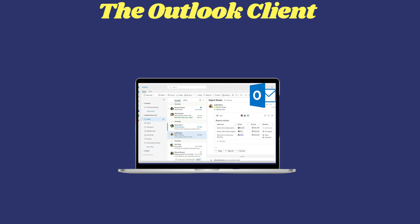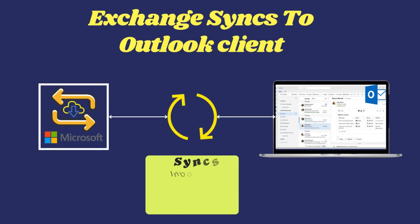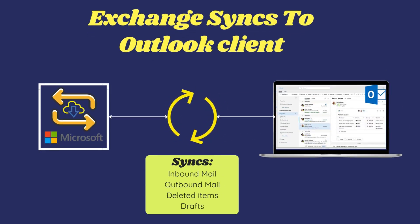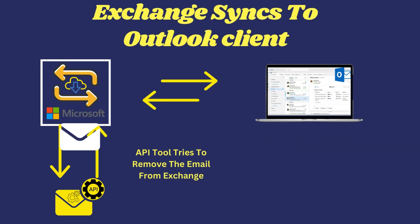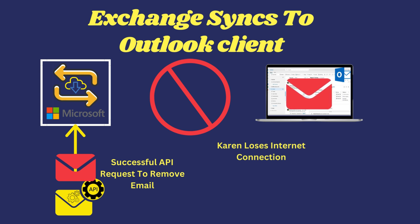A second instance that could put users at risk is the email client on a user's laptop or device. An end user may be using an Outlook Thick client, which syncs emails from Microsoft Exchange to their Outlook application — typically instantaneously. But a series of unfortunate events could cause problems. For example: an email hits the exchange and into Karen's inbox before the API tool has a chance to block it. Suddenly, Karen has internet issues, blocking her email client from syncing to the exchange, leaving the malicious email in her inbox. Even though the API gateway technically removed it from the exchange, Karen can't sync back up and now has the opportunity to interact with a malicious phishing or malware item.